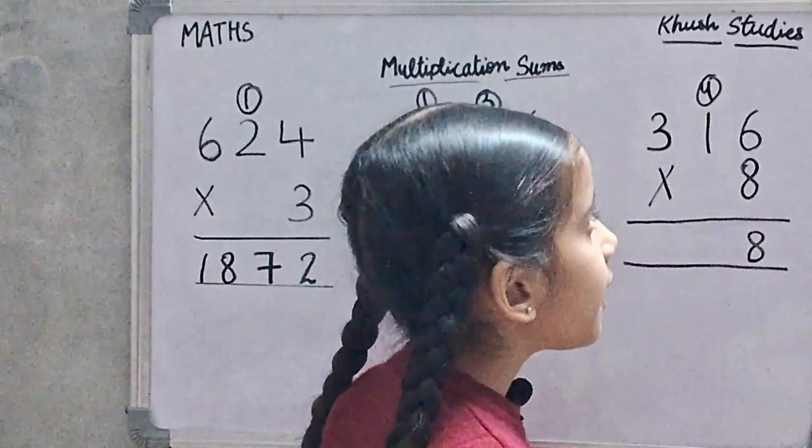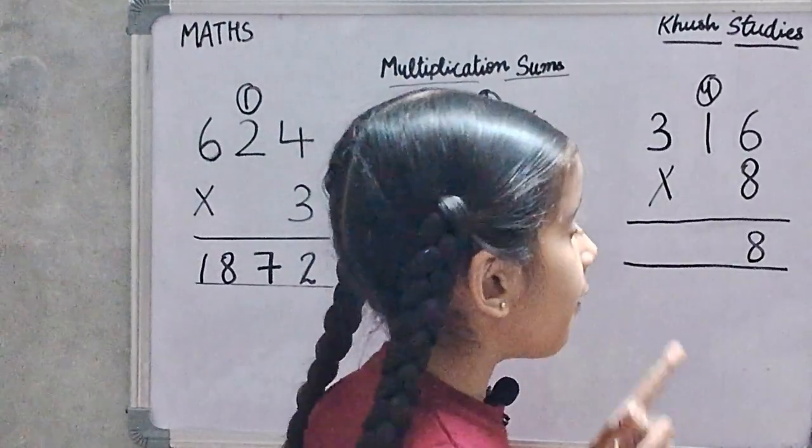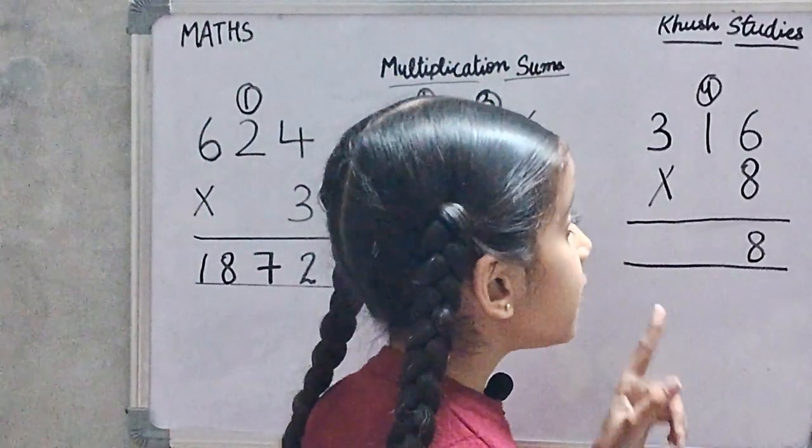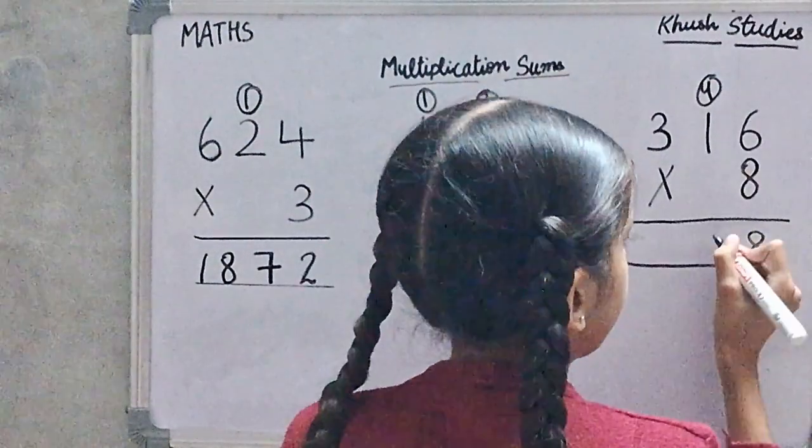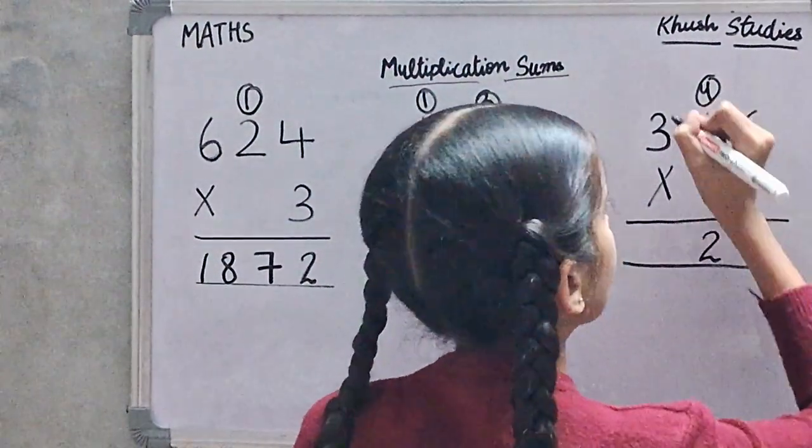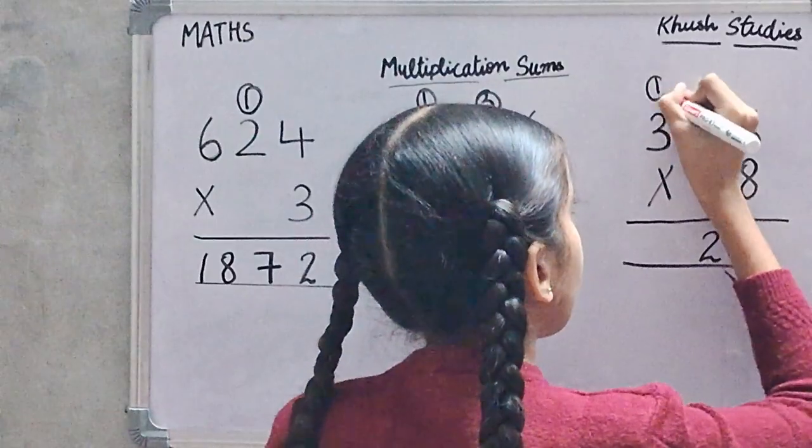8 times 1 is 8. We will add 4. 8 times 1 is 8 plus 4 is 12. We will carry 1 on 3.